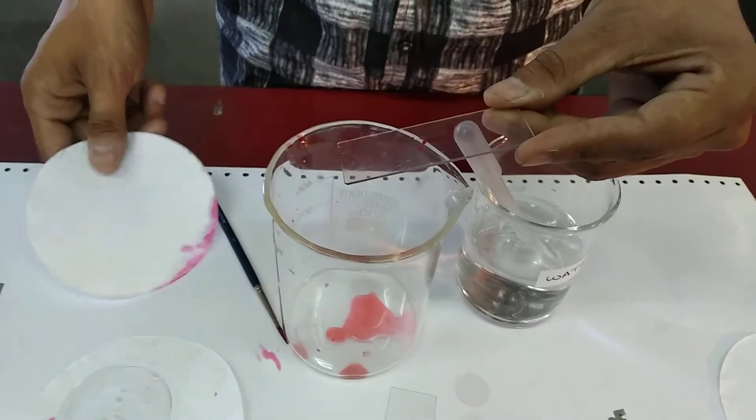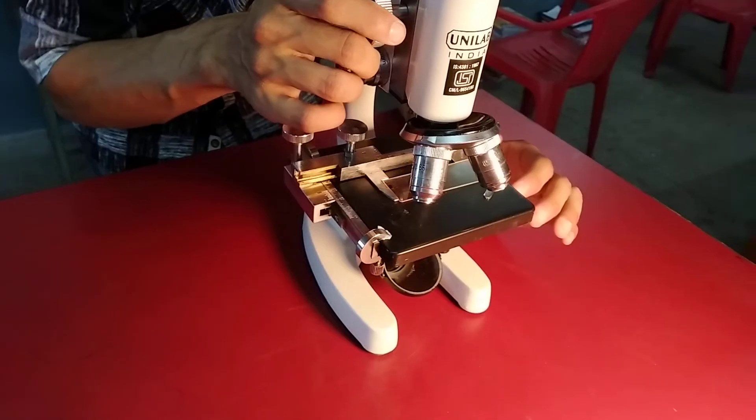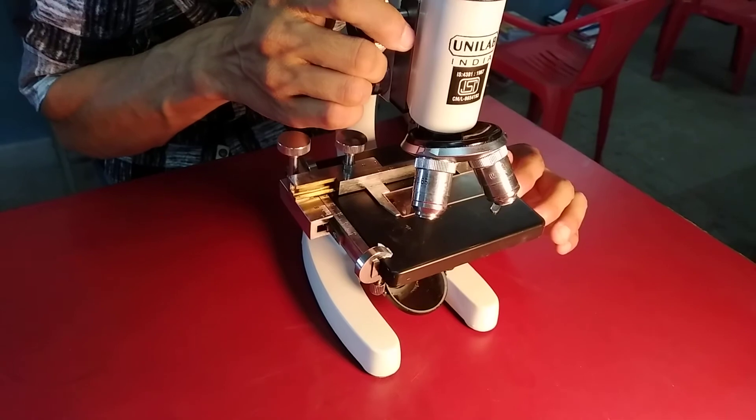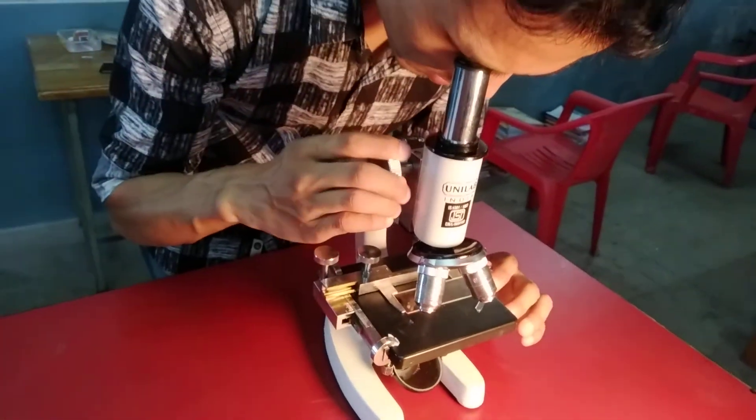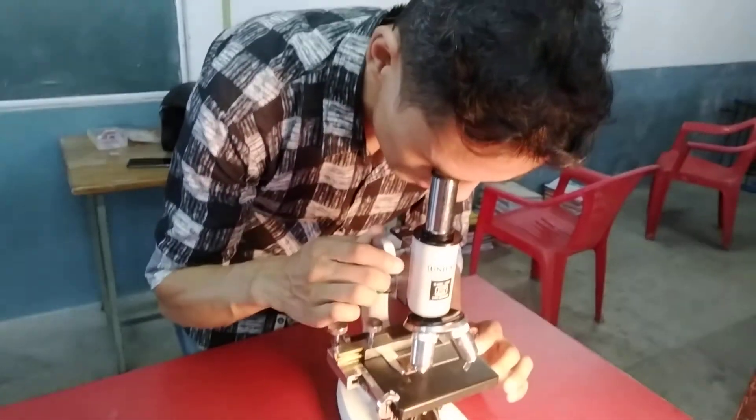Then put it under a microscope and observe it. Focus on the properly stained section.